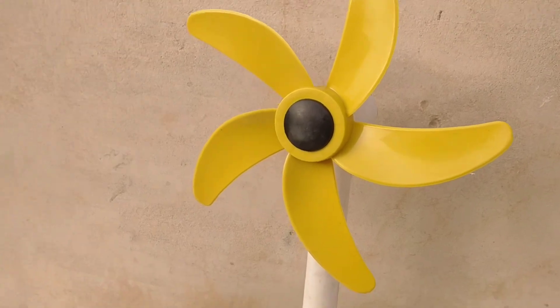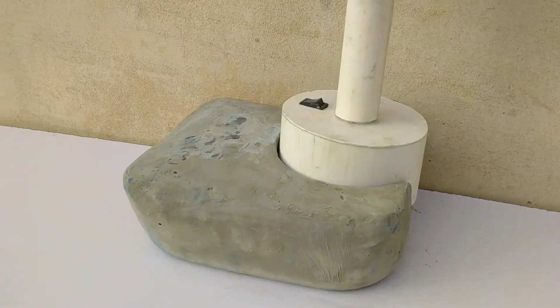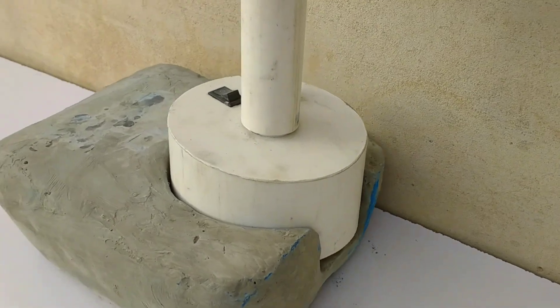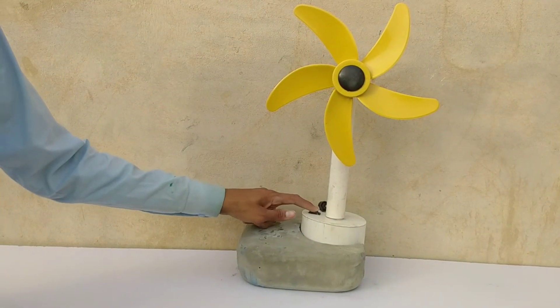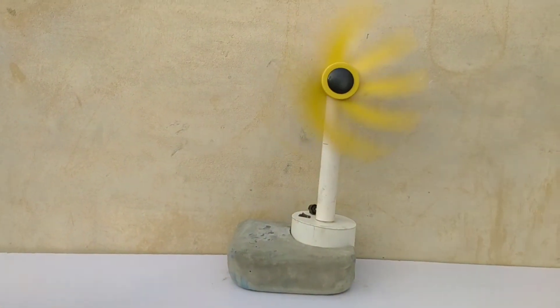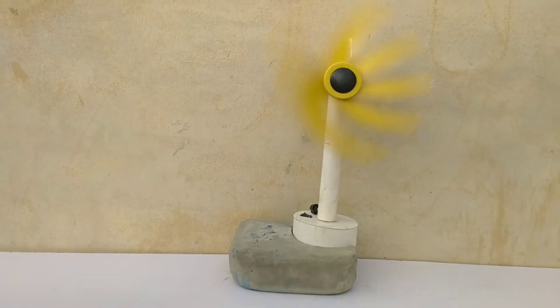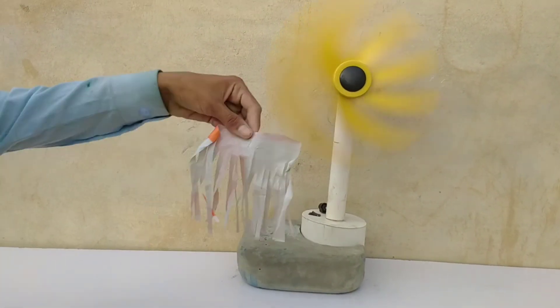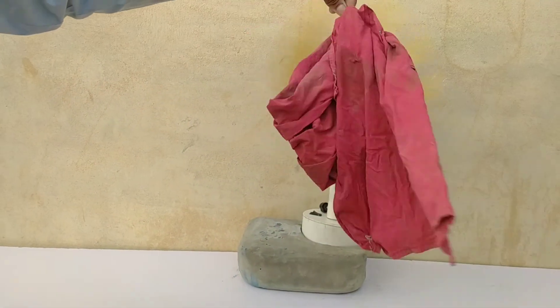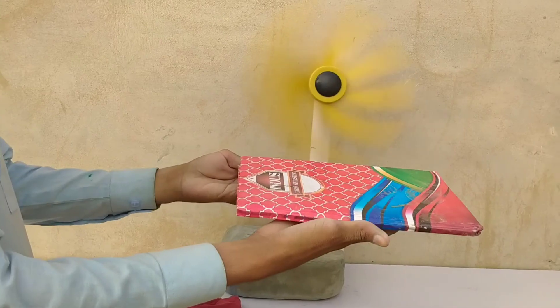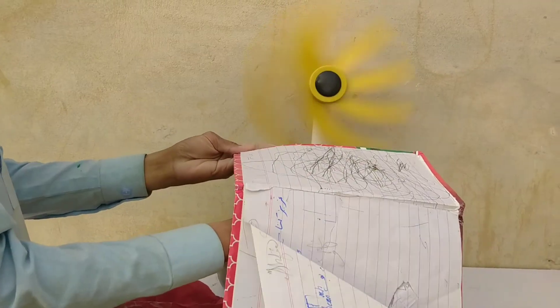Look, the table fan is ready. It is very powerful. It is very powerful because we have a 17 volt battery. We can use it for our table fan. Look, how much wind you can feel.